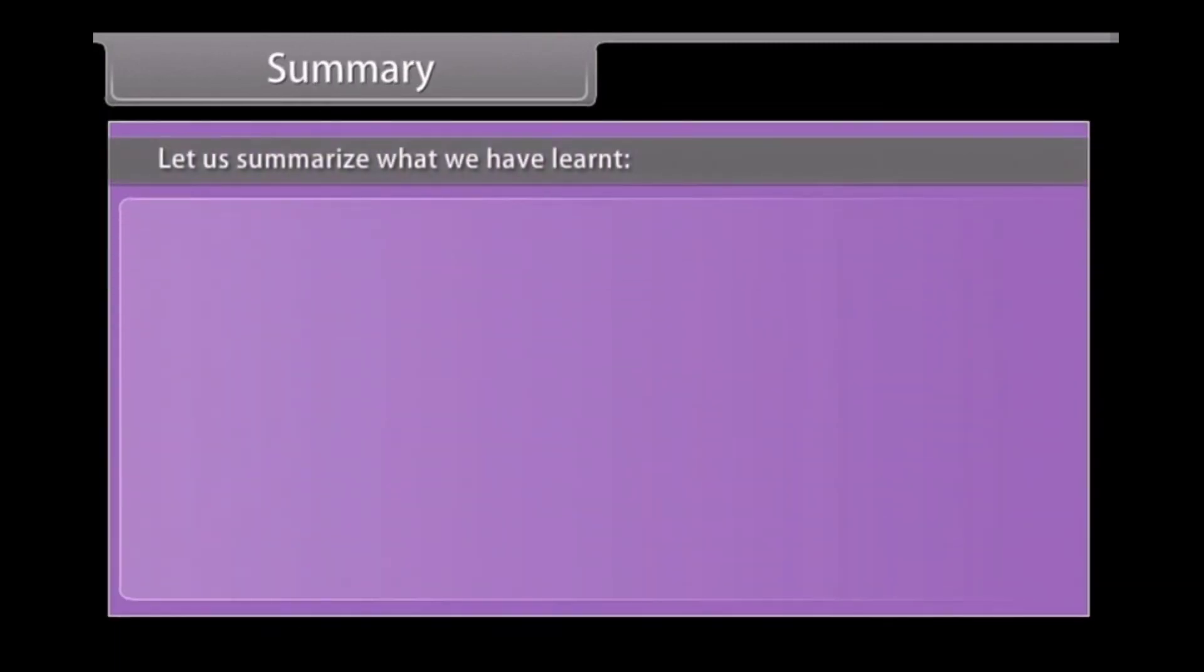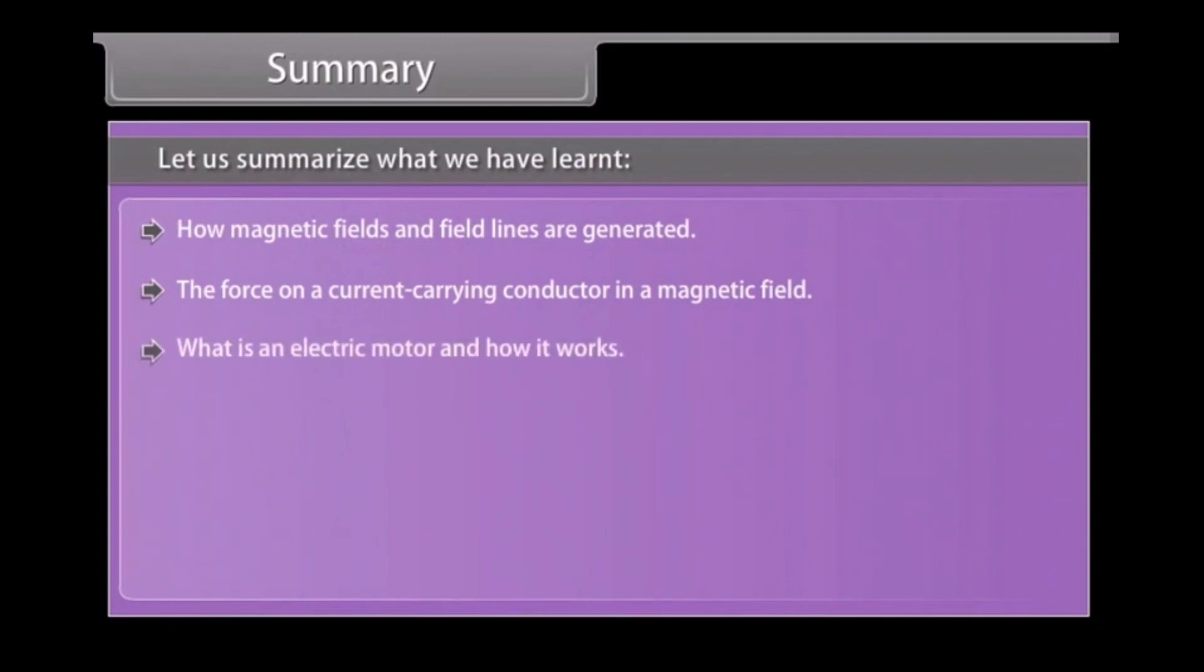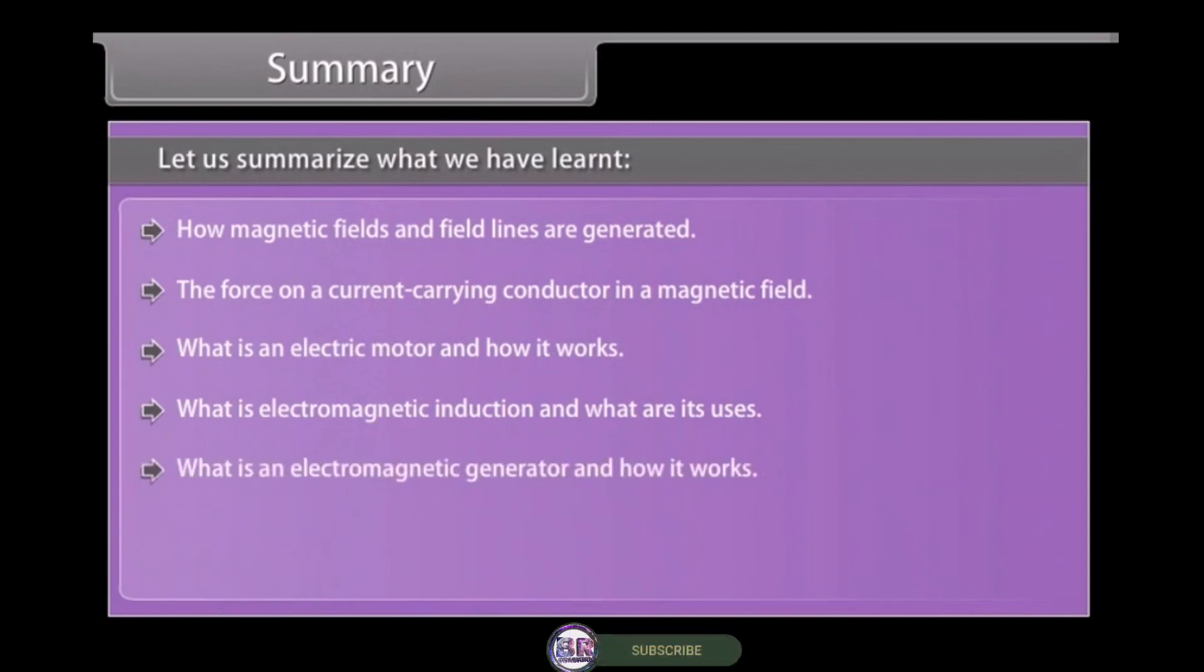Summary. Let us summarize what we have learned. How magnetic field and field lines are generated. The force on a current carrying conductor in a magnetic field. What is an electric motor and how it works? What is electromagnetic induction and what are its uses? What is an electromagnetic generator and how it works? The use of wires and fuse in domestic electric circuits.